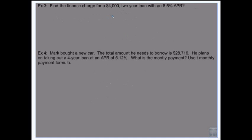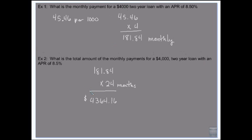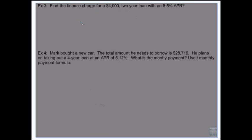So it's $4,364.16. And then to determine what our finance charge would be, we're paying $4,364.16, we originally borrowed $4,000. So $364.16 we're paying in interest, or that's our finance charge.